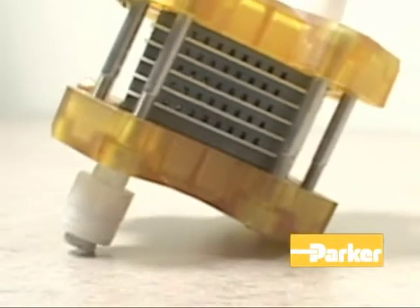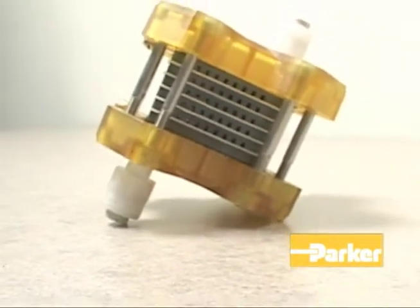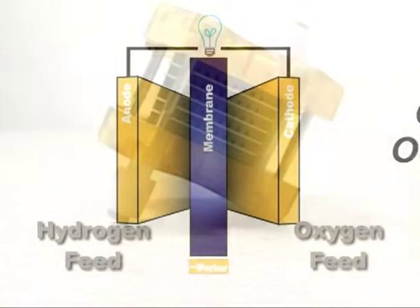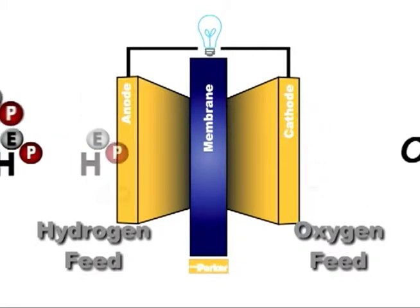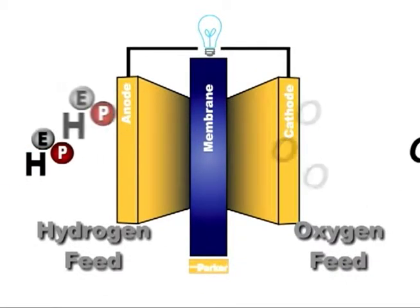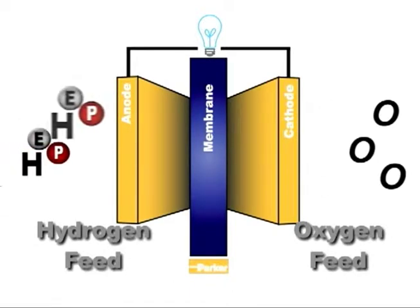Here is a model of a proton exchange membrane, or PEM, fuel cell. The hydrogen and oxygen flow into either side of the fuel cell. The hydrogen molecules arrive at the gas diffusion layer, or GDL.